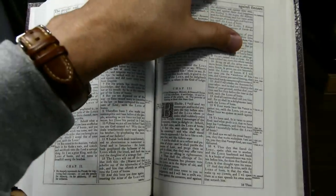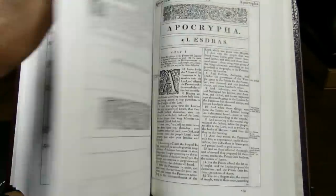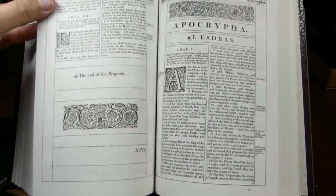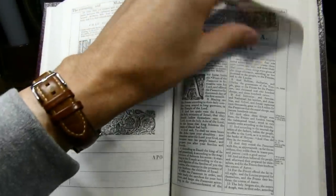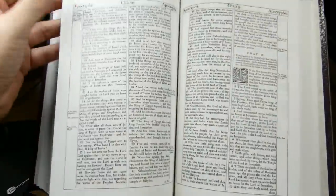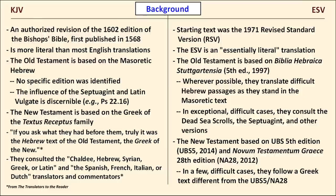The KJV was originally printed with the Apocrypha included in a separate section between the Testaments. The original ESV excluded the Apocryphal books. To my knowledge, only one edition of the ESV with Apocrypha has appeared, and that edition is currently out of print.